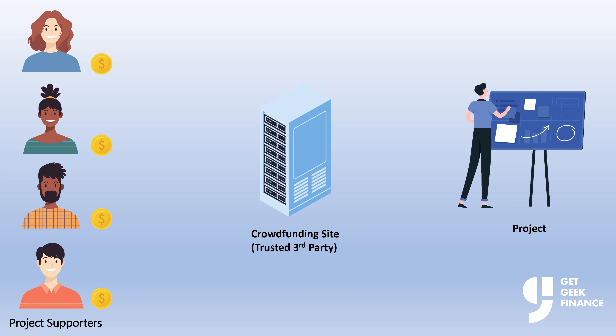Smart contracts are written into lines of code stored on a distributed, decentralized blockchain network. They are self-executing, which is what makes them smart, as it avoids the need for a trusted intermediary or authority that generally costs money. They permit transactions and agreements to be carried out by the parties involved — for example, helping you exchange money, property, or anything of value in a way that avoids middlemen and is transparent and conflict free. The code controls the execution and transactions are trackable and irreversible.